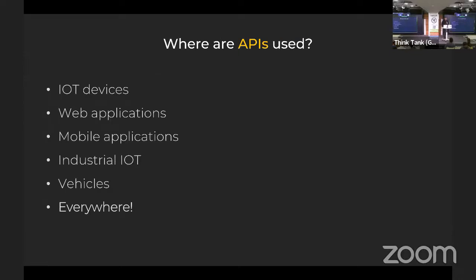APIs are used everywhere — only my dog doesn't have an API these days, and I'm not even really sure about that. Industrial IoT, vehicles, mobile applications, web, IoT devices — you name it, it has an API. If it goes to your phone or your computer, it has an API.